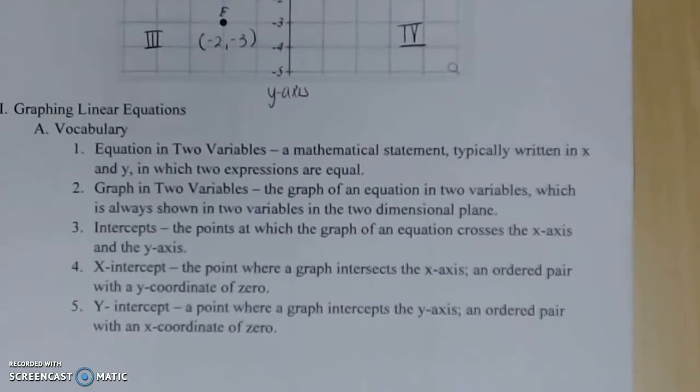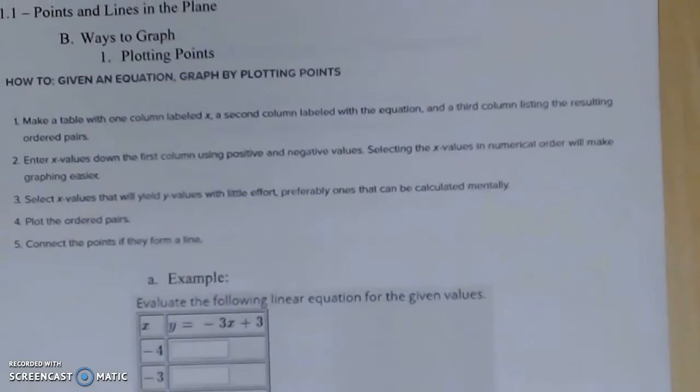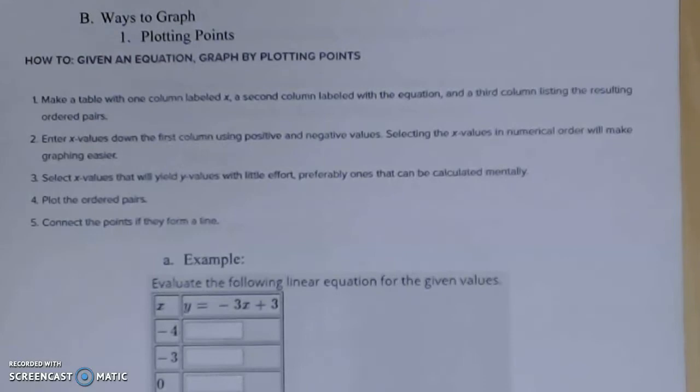As we continue our conversation, we're going to pick up some more vocabulary words as we go. Now that we have ordered pairs, what we need to do is learn how to put all this information together in order to graph an equation. The first way we're going to learn how to graph is by plotting points. Getting quite a few ordered pairs, putting them together, and creating a line.